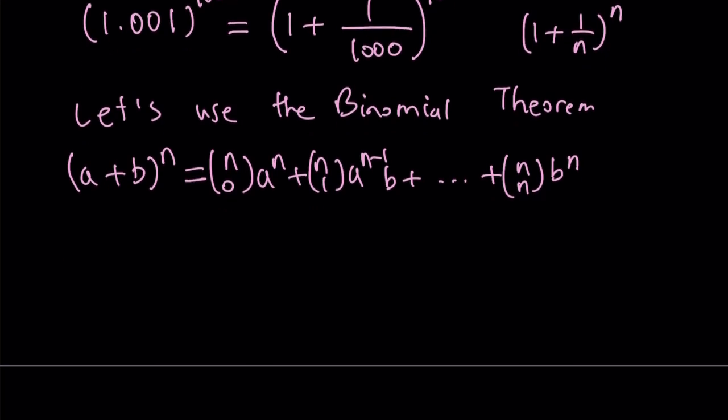Let's go ahead and use that for our case. So I have 1 plus 1 over 1000 and I'm going to raise it to the power 1000. So n is going to be 1000 in this case and a is going to be 1 and b is going to be 1 over 1000.